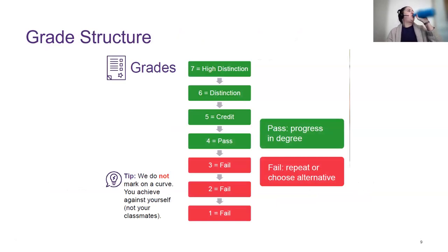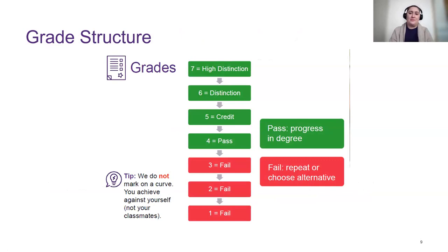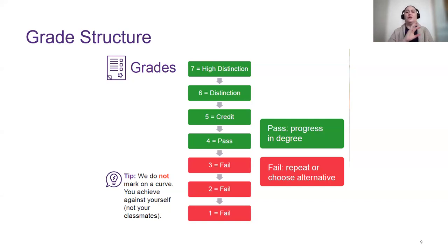The grade structure at UQ: a High Distinction is 7, a Distinction is 6, a Credit is 5, and a Pass is 4. A grade of 3 is a fail but may allow a supplementary assessment. A grade of 2, 1, or any letter grade is a fail. UQ does not mark on a curve. If you fail a compulsory course you will need to retake it; for an elective you may be able to choose a different course.